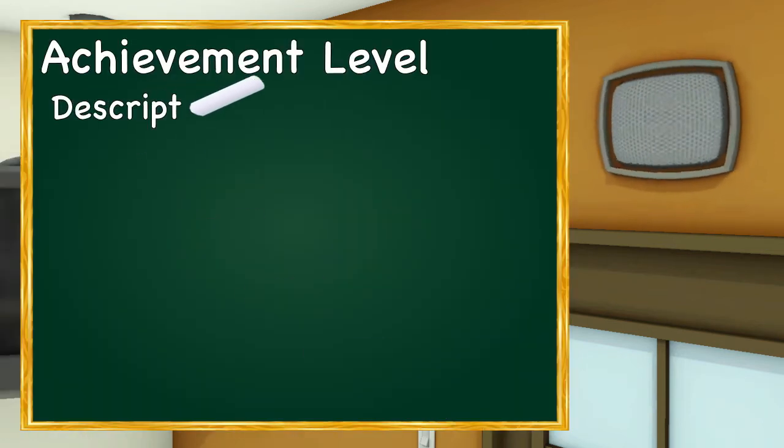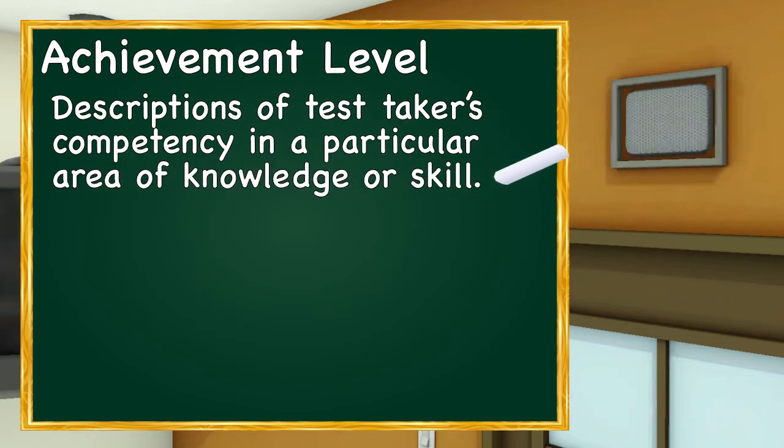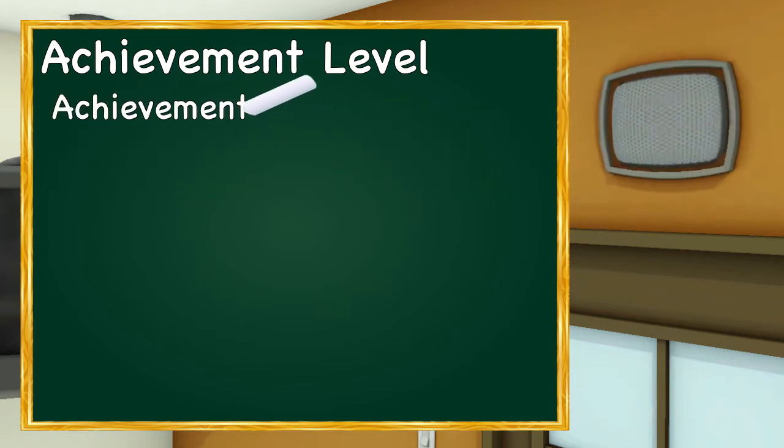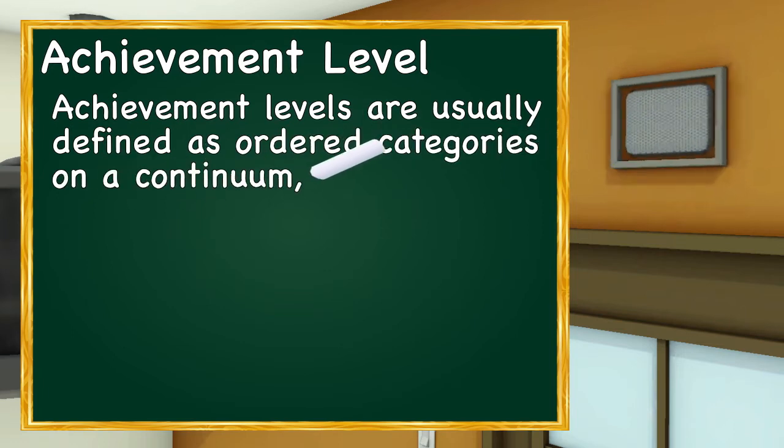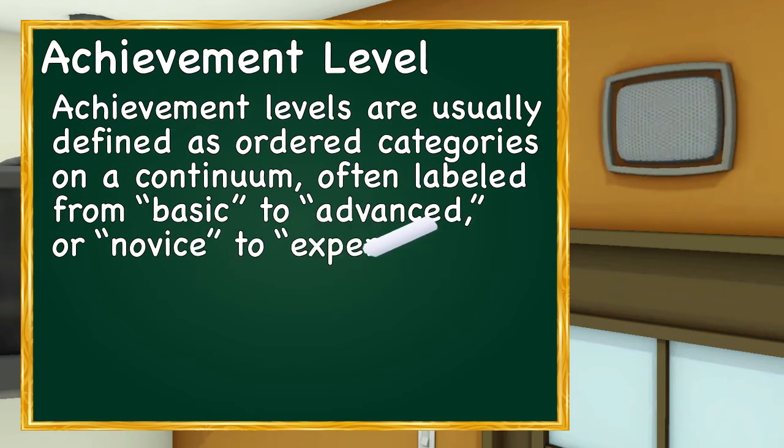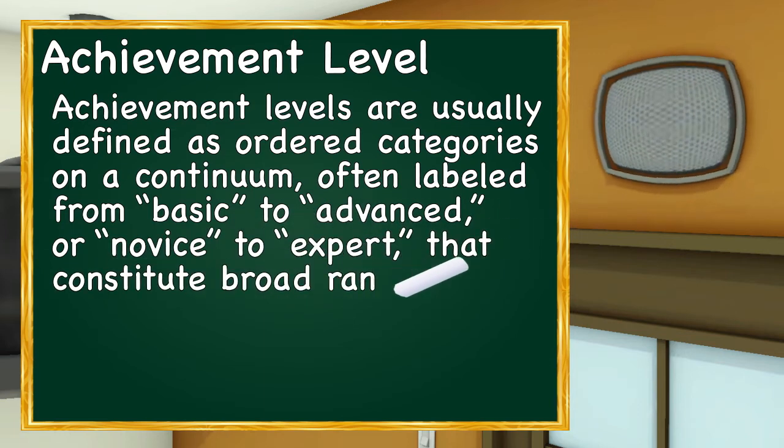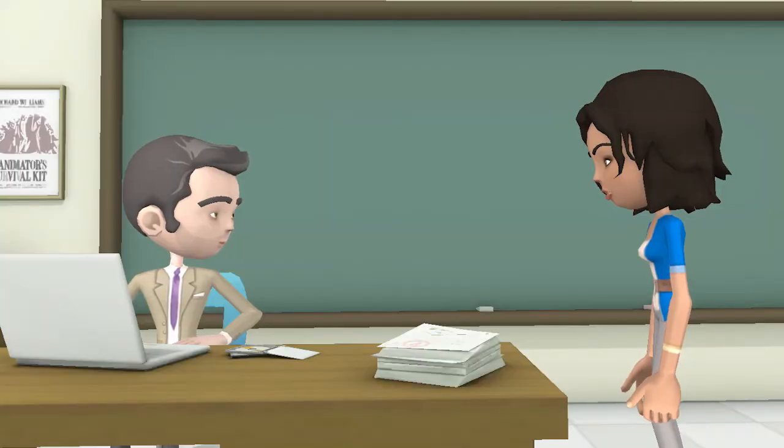Achievement levels are descriptions of a test taker's competency in a particular area of knowledge or skill. They are usually defined as ordered categories on a continuum, often labeled from basic to advanced, or novice to expert, that constitute broad ranges for classifying performance. To establish cut scores, ATI uses equi-percentile equating.